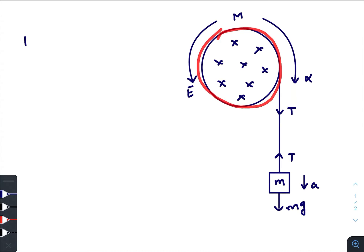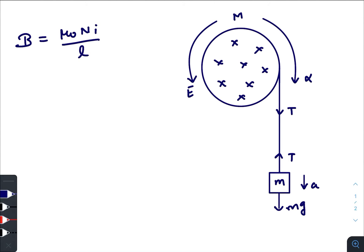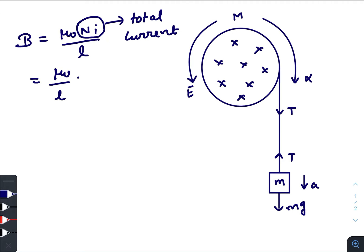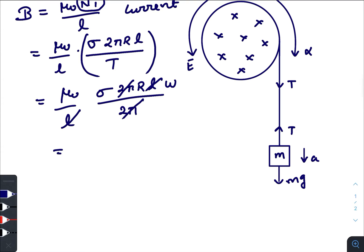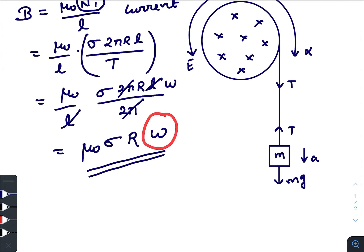Let us find the expression for that magnetic field. This whole cylinder will behave as a solenoid, and for an infinite solenoid B = μ₀nI. The nI term represents the total current. Writing the total current in terms of total charge: B = (μ₀/L) · (Q/T), where Q = σ·2πRL and the time period T = 2π/ω. After cancellation, the final expression is B = μ₀σRω. So the magnetic field depends on the angular velocity ω.